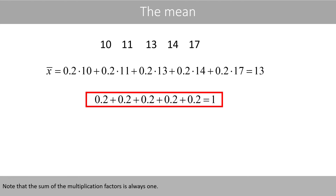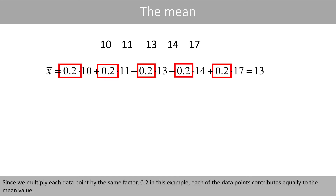Note that the sum of the multiplication factors is always 1. Since we multiply each data point by the same factor — 0.2 in this example — each of the data points contributes equally to the mean value.